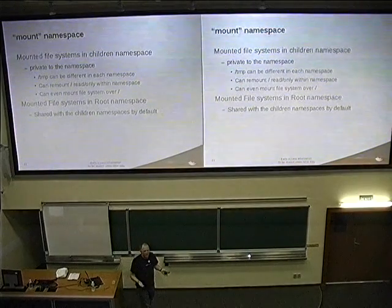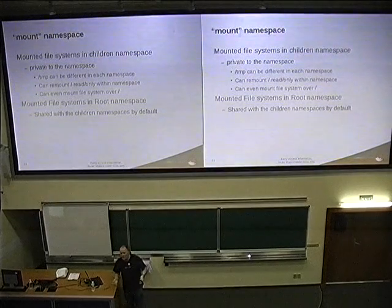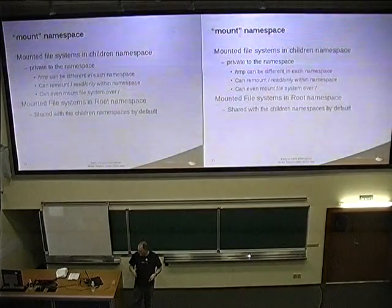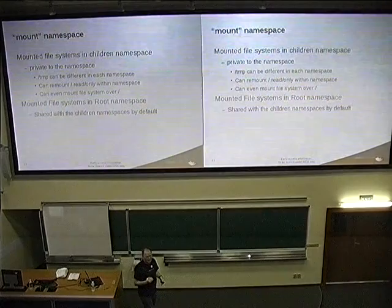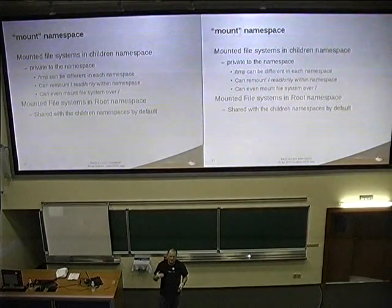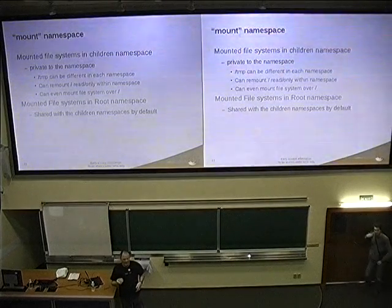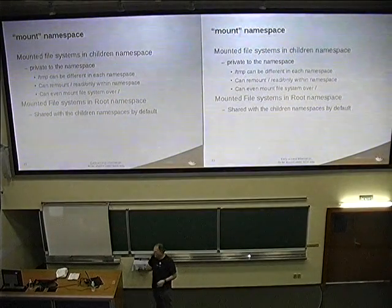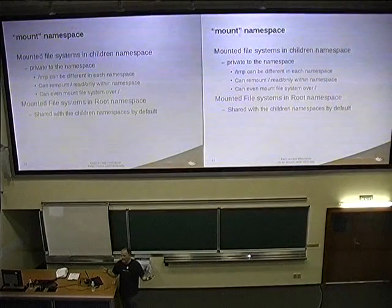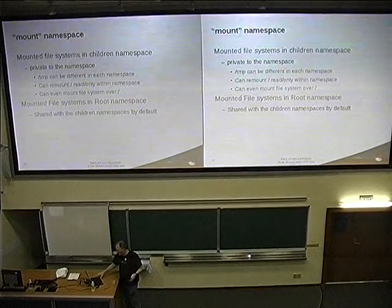Mount namespace has been used for years — in RHEL 5 for PAM namespace, in the SE Linux sandbox in RHEL 6, and in RHEL 7. It allows you to change your mount table, mounting new file systems over existing ones and having a different world view of your file system layout. The standard case is /tmp, where we bind-mount over it so all users on the system have different /tmp directories from each other.